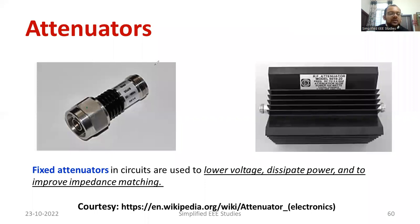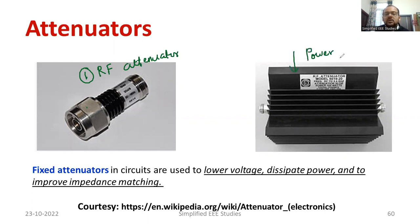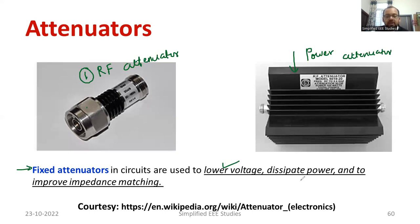There are different varieties of attenuators available. The first type is the RF attenuator — radio frequency attenuator. Another type is the power attenuator. Fixed type attenuators are mainly used for reducing higher voltage levels, dissipating power, and improving impedance matching. In some cases, impedance matching is necessary, and at that time we can use this type of fixed attenuator.